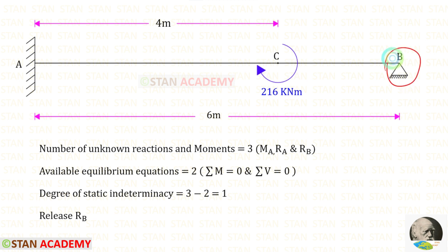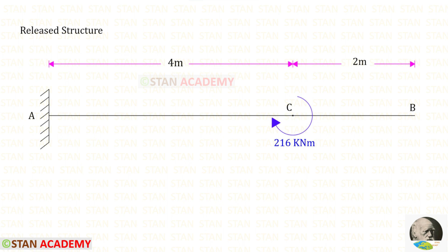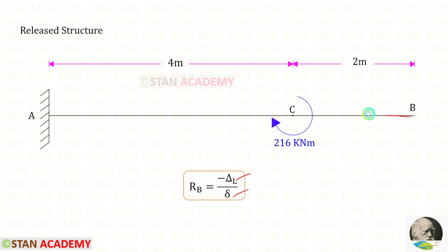From point B let us release RB. When we release RB, point B becomes a free end. We know the formula to find RB: minus delta_L upon delta. To find both of them let us use the unit load method. In this beam there are two different parts, BC and CA, so we have to make two sections — one in BC and one in CA.